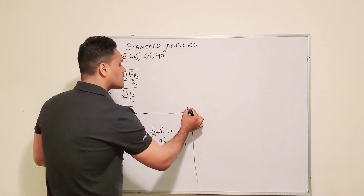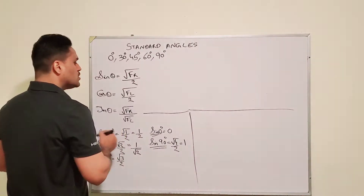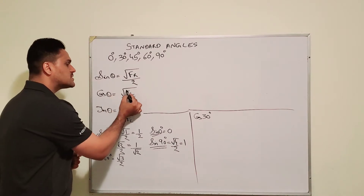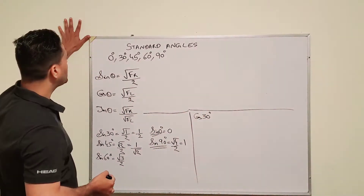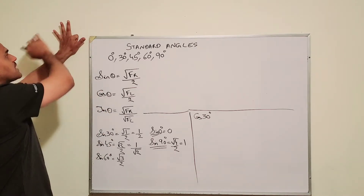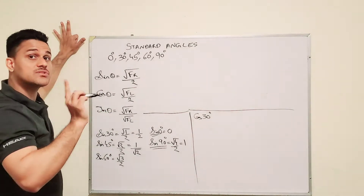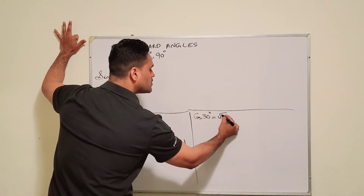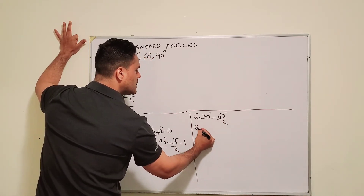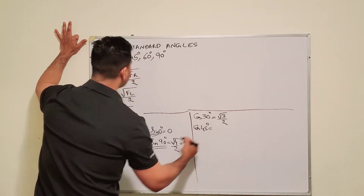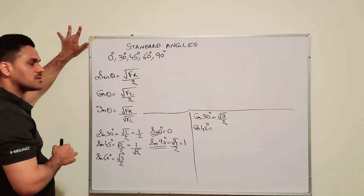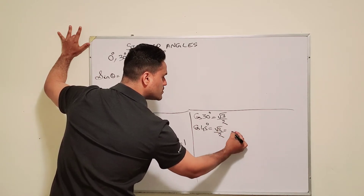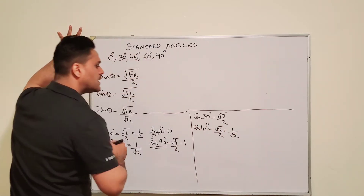Now we're going to solve for cos. The formula for cos is square root of fingers on the left over 2. To find cos 30, we bend our 30 degree finger — I see three fingers on the left — so it's square root of 3 over 2. For cos 45, we bend the 45 degree finger and see two fingers on the left, so it's square root of 2 over 2, which can also be written as 1 over square root 2.